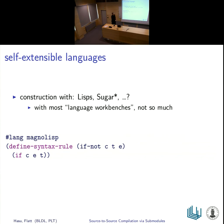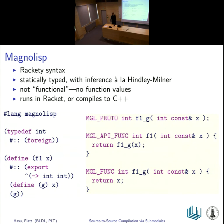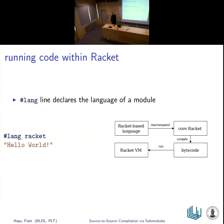Here we have some Magnolisp code. Magnolisp is the example language used in the paper. You can use Racket macros there, and indeed the syntax is Racket style, but the language is different in that it's statically typed and not functional either. You have the option of either running in Racket or compiling to C++. To run code in Racket, we have to tell the Racket system what language our code is in. Evaluating it involves macro expansion, byte compilation, and execution in the VM — and then it prints Hello World.